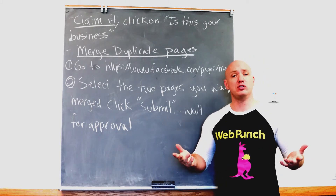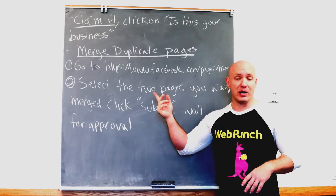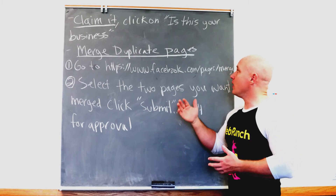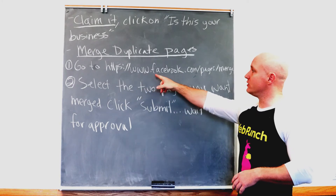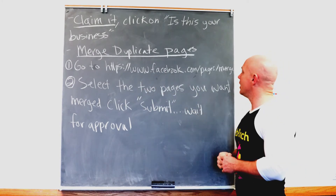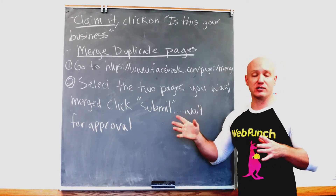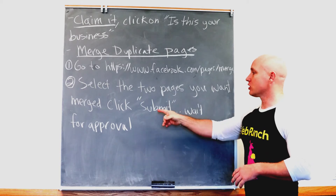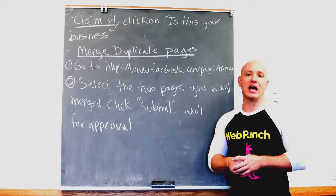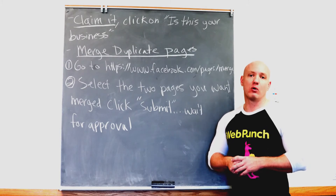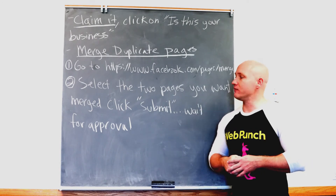The second option: let's say you do have a page on Facebook, but you also have an unofficial page on Facebook. In that case, we want to merge the duplicate page. To do that, you're going to go to www.facebook.com/pages/merge. Once you're there, you're going to select the two different pages — your official page and your unofficial page — and submit that to Facebook. Then you'll just have to wait a few days for Facebook to approve the merging of those two pages.